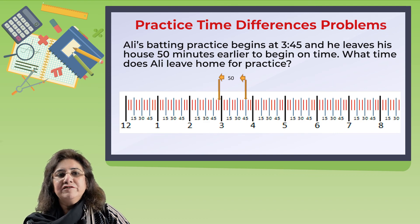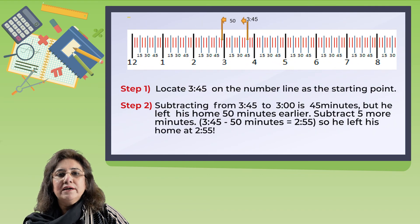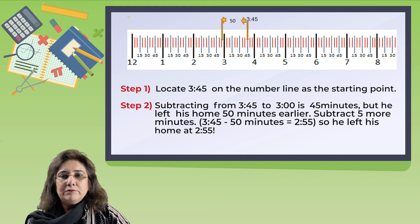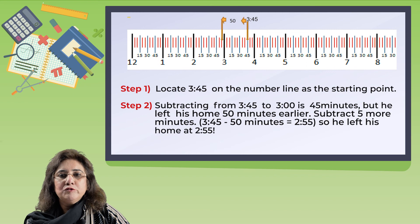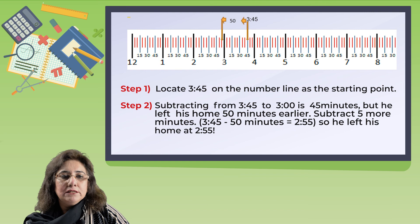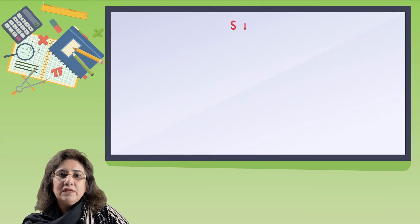Let's look at another example. Ali's batting practice begins at 3:45 and he leaves his house 50 minutes earlier to begin on time — what time does Ali leave home for practice? Remember, there are 60 minutes in an hour. Step 1: locate 3:45 on the number line as the starting point. Step 2: subtracting from 3:45 to 3:00 is 45 minutes, but he left 50 minutes earlier, so subtract 5 more minutes. 3:45 minus 50 equals 2:55 — so he left his home at 2:55.